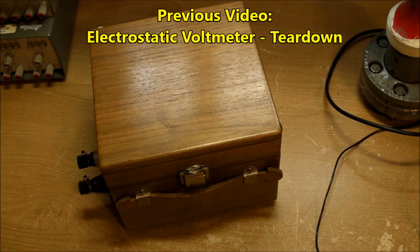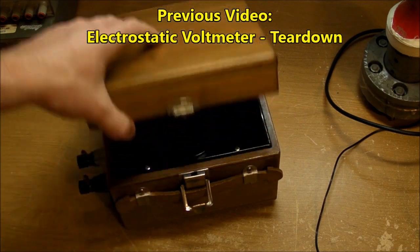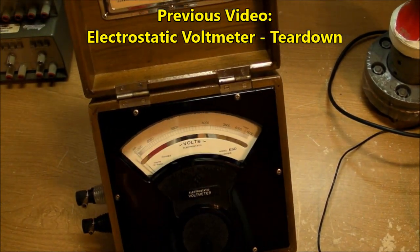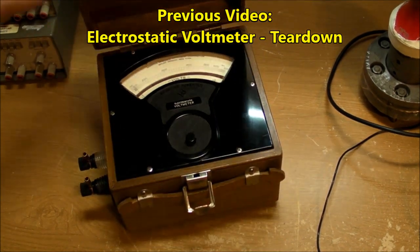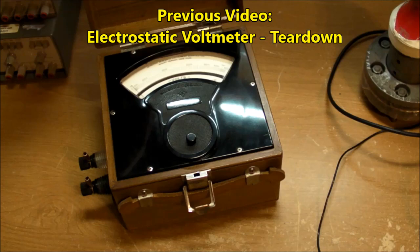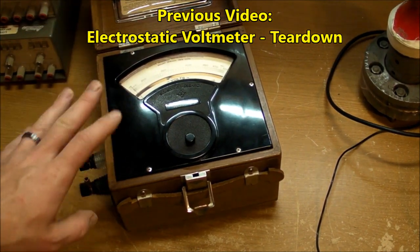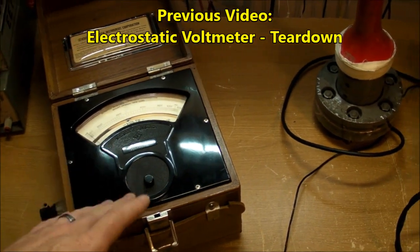Hi everybody, in the last video we had a look at the inside of this beautiful electrostatic voltmeter with a maximum input sensitivity of 5,000 volts AC or DC. We're going to look at it again, this time in operation, hooked up to a high voltage source to see how it stacks up to some modern-day digital alternatives.